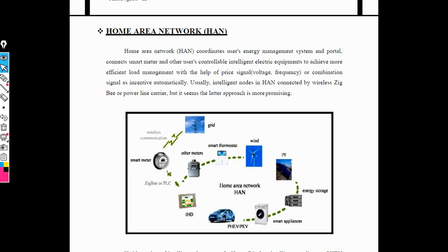Home area network includes smart thermostats, wind energy, solar energy, energy storage, batteries, smart appliances, plug-in hybrid electric vehicles, and electric vehicles. It is also connected to Zigbee or PLC, and uses smart meters. This smart meter is connected wirelessly to the grid, and smart meters are used in the home.